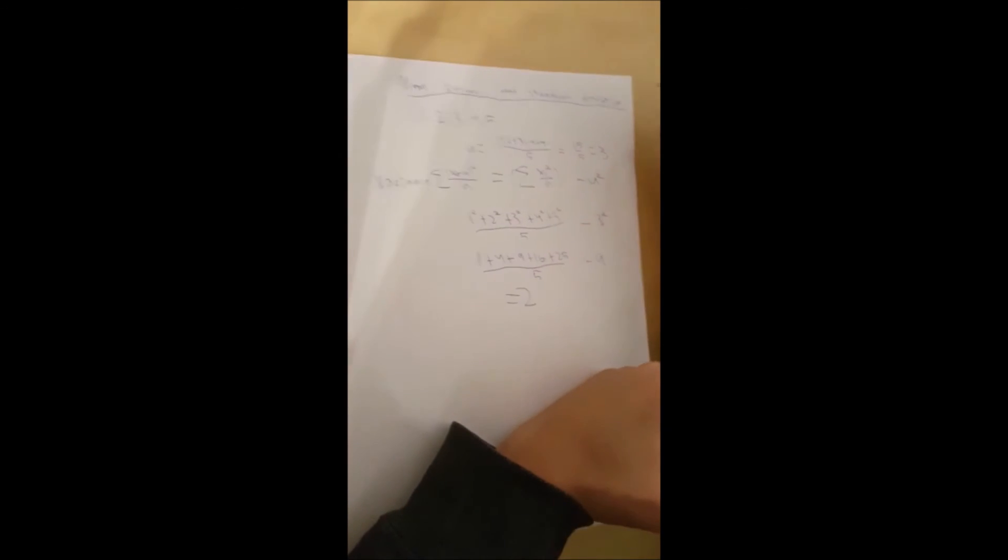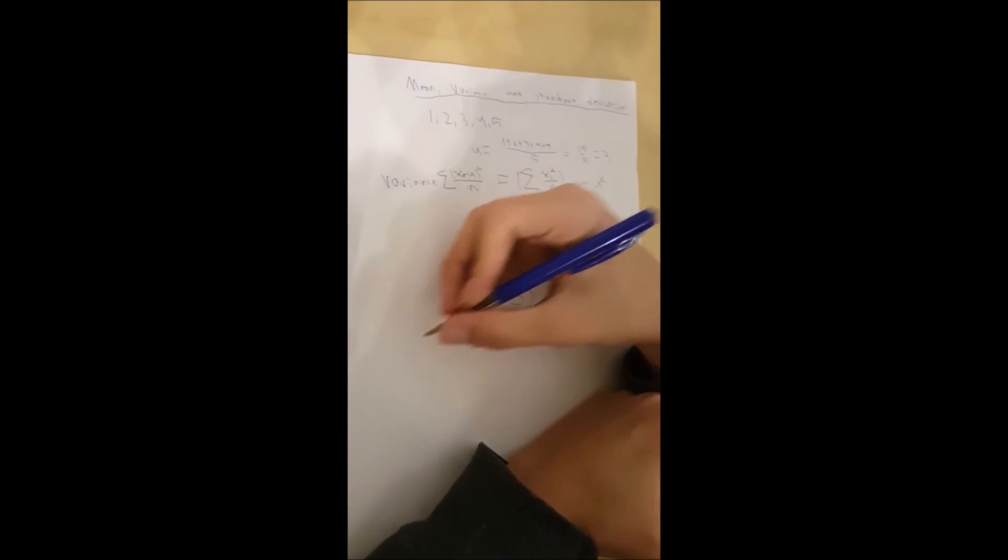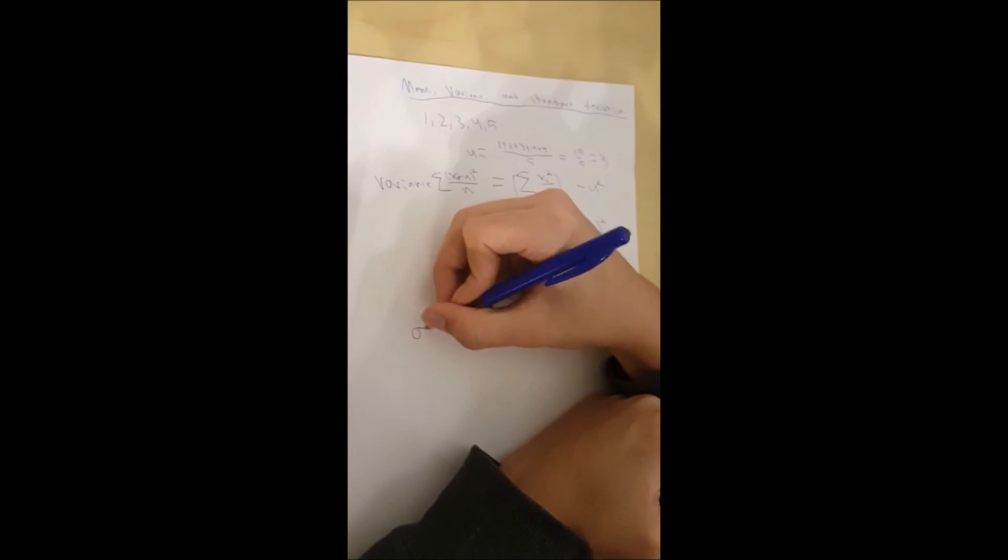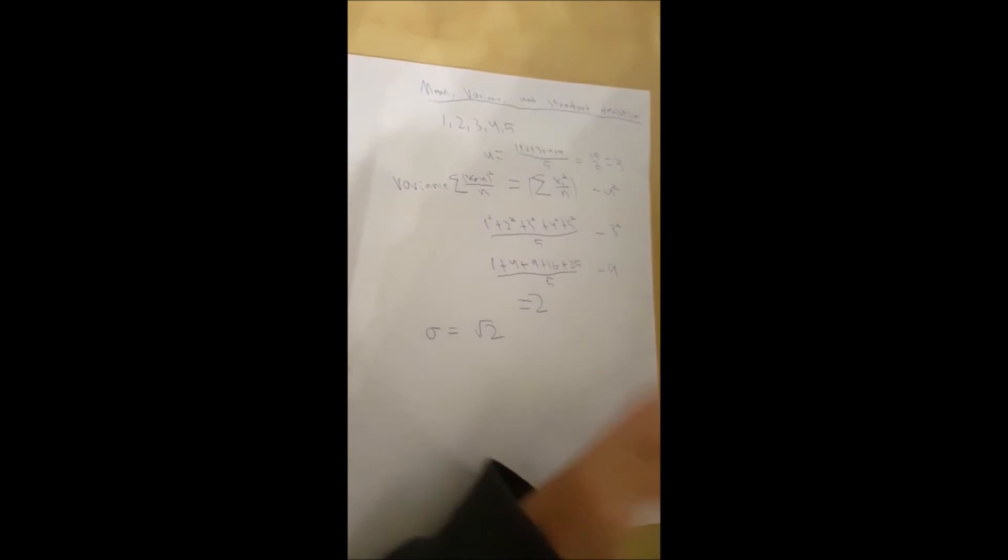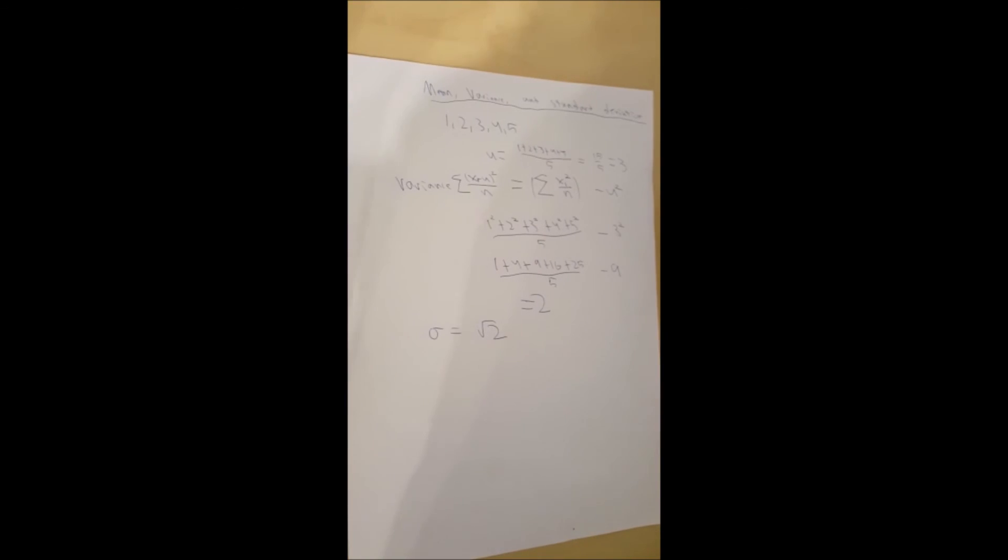And the standard deviation, that's just the square root of the variance. So standard deviation, the square root of 2. That simple. And that was it for today.